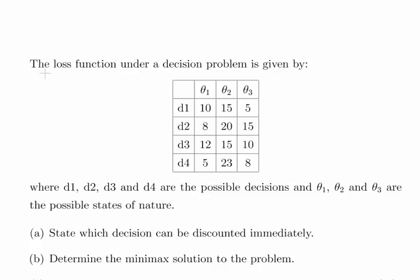In this presentation we're going to look at decision theory and a loss function table. In this loss function table we have four possible decisions and three possible states of nature: theta 1, theta 2, theta 3 are the states of nature and d1, d2, d3, d4 are the decisions. This is a loss function table so these signify the losses incurred by each decision according to each state of nature.